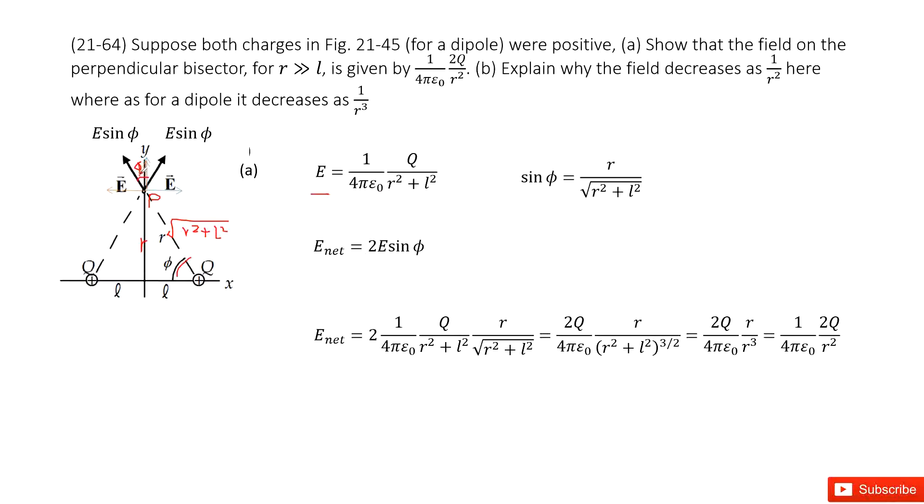Now we need to find the net electric field, so we add these two vectors together. Project these two E vectors along the x-axis and y-axis. You can see the x-axis components cancel out—they are equal in magnitude but opposite in direction. So we look at the y-component.